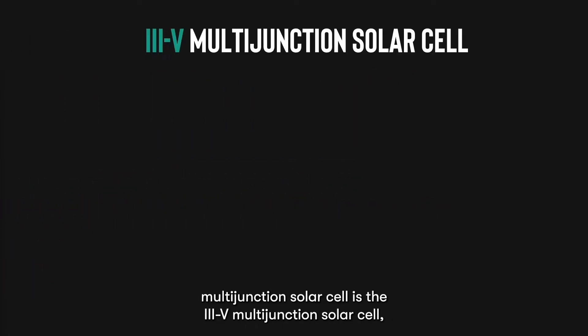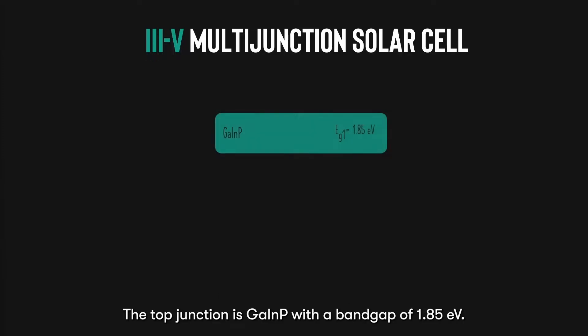One of the industrial standard multi-junction solar cells is called the 3-5 multi-junction solar cell, because its material is made from the combination of group 13 and group 15 elements. This multi-junction solar cell consists of three junctions. The top junction is gallium-indium phosphide, with a bandgap of 1.85 eV.